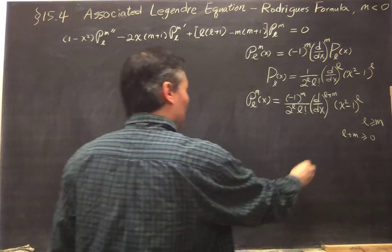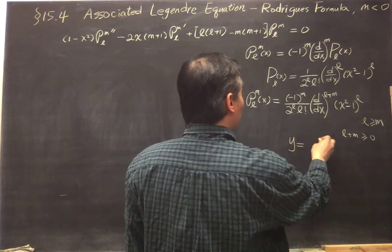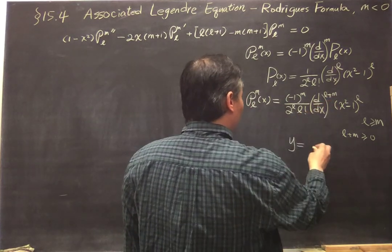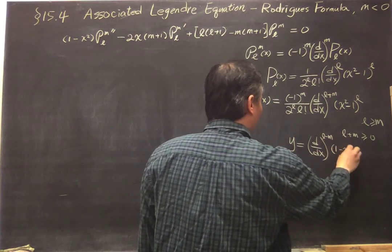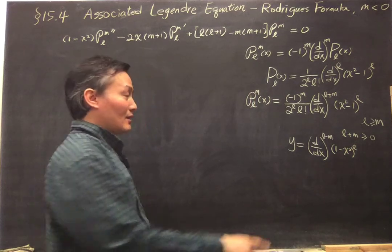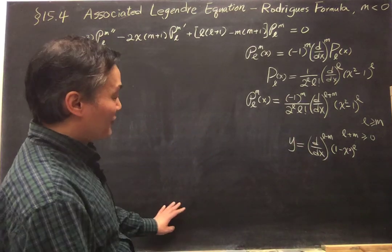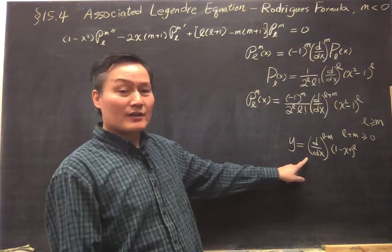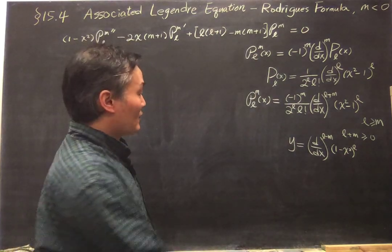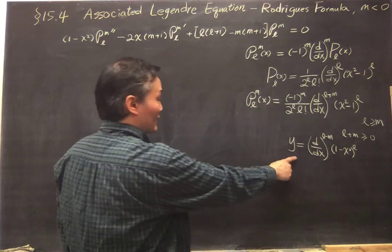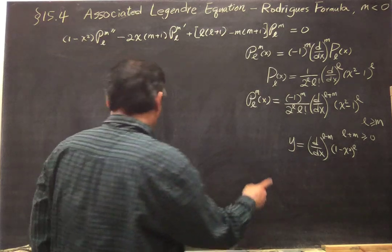We'll define a function Y, explicitly writing a negative M, so: Y = (d/dx)^(L-M) operating on (1 - x²)^L. Note that writing (1 - x²) versus (x² - 1) doesn't matter since this is a linear equation, so the sign of the coefficient doesn't matter. We try to see if this satisfies the associated Legendre equation. We start by taking the second derivative of Y and substituting into the equation.